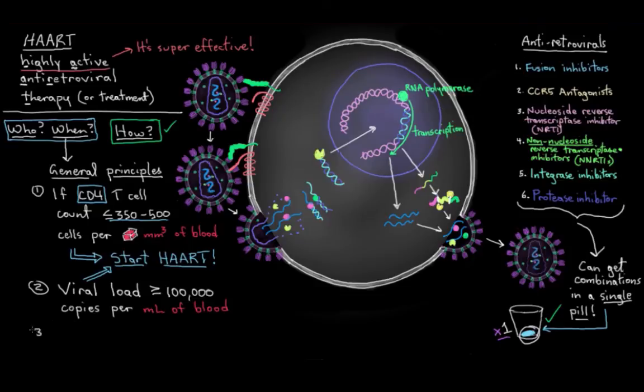And I guess the last thing I'll say about this is if a person is pregnant, if they're a young child, if they've progressed to AIDS, or if there's an opportunistic infection or an AIDS-defining illness present, then regardless of CD4 count, even if you're higher than that 350 to 500 cutoff, HAART needs to be started right away to help your immune system recover as much as possible.